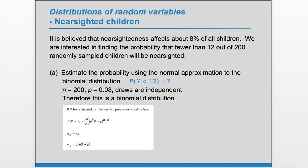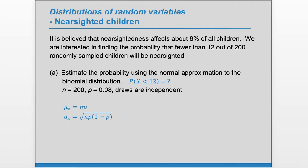Now we can find the mean and standard deviation of this binomial distribution using shortcut formulas. The mean mu = n·p and the standard deviation sigma = sqrt(n·p·(1−p)). Plugging in n = 200 and p = 0.08, we get a mean of 16 and a standard deviation of 3.84. So on average we expect to see about 16 nearsighted children in our sample, give or take about 4.